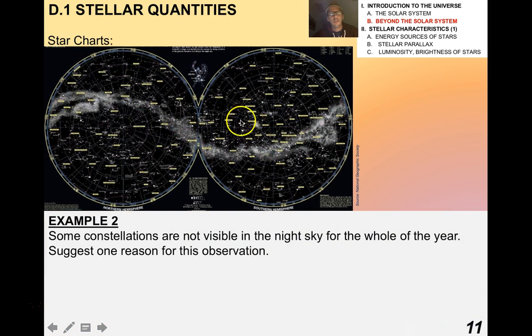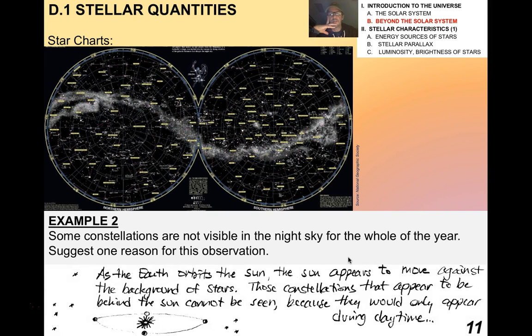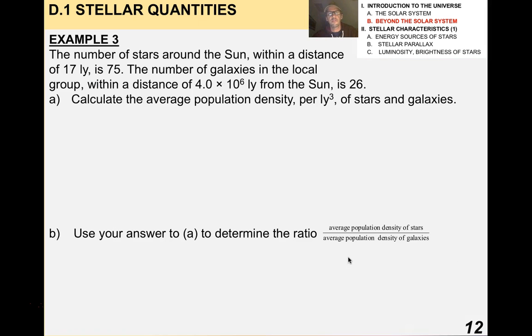Star charts. These are really cool. These are charts showing the relative positions of stars. Here's the Milky Way. A qualitative question: some constellations are not visible in the night sky for the whole year, suggest one reason. It's a great IB question. The reason is that as the earth orbits the sun, the sun appears to move against the background of stars, but the constellations that appear to be behind the sun cannot be seen because they would appear only during the daytime. Constellations are always there. It's just that the sunlight is so bright in the atmosphere that we can't see the stars. The stars are always there. It's just that the sunlight is blinding us from it.